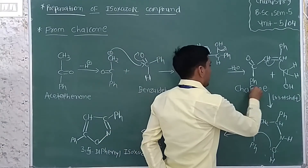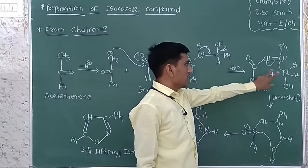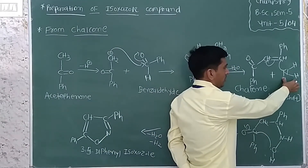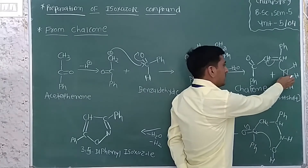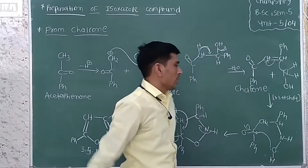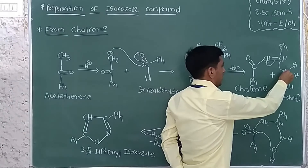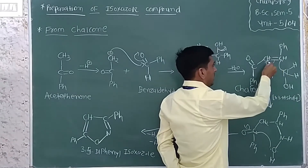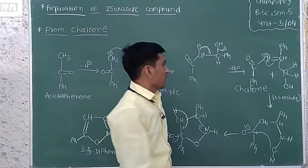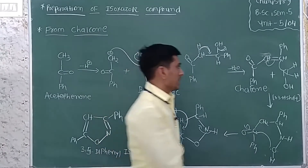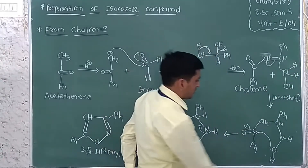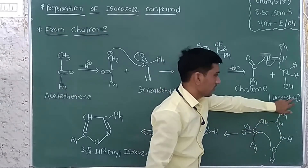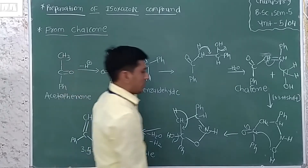This compound is called chalcone. Chalcone reacts with hydroxylamine. The amine contains two hydrogen atoms. One hydrogen atom transfers from the nitrogen atom to this carbon atom by 1,3-hydrogen shifting. The nitrogen atom performs nucleophilic attack on this carbon atom, the carbon-carbon double bond opens, and the double bond shifts.